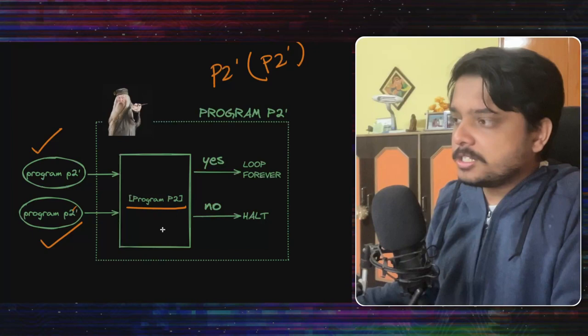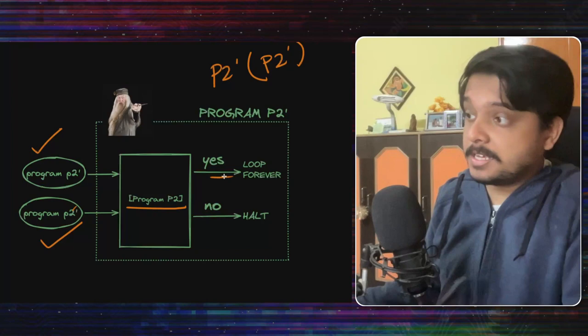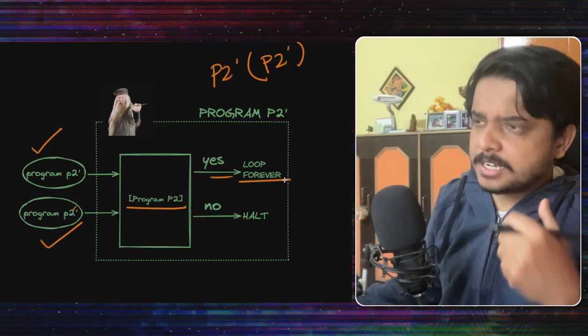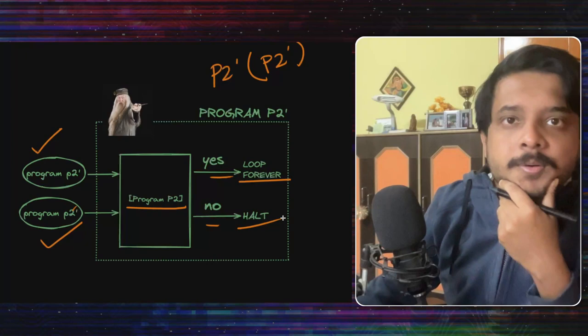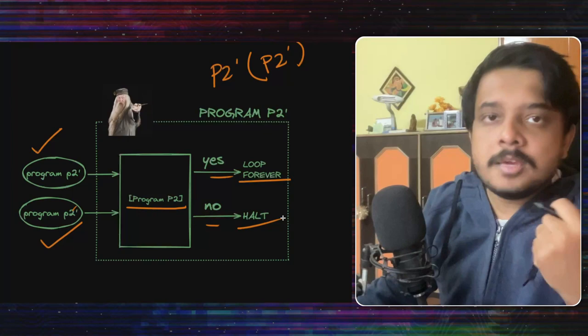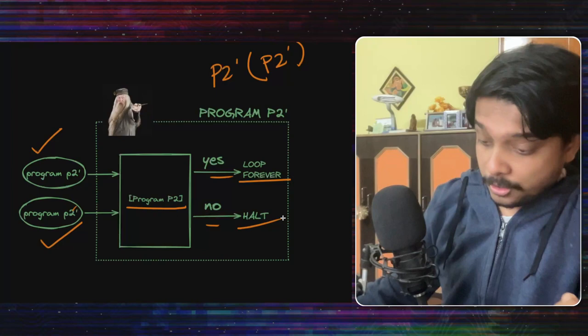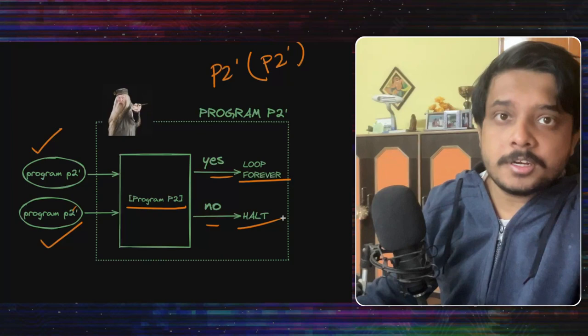If P2 says that program P2 dash will halt, if it says yes, then it will loop forever. This doesn't make sense, right? Because just now our magical program P2 said that it will halt but now program P2 dash is looping forever. See what happens when it says it won't halt? Program P2 dash halts. So every time P2 says something, it is being contradicted immediately and this gives rise to a paradox and all this is happening because the program is talking about itself and it cannot tell whether it will halt or not halt.